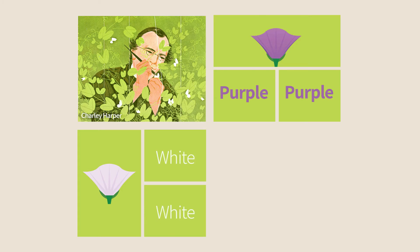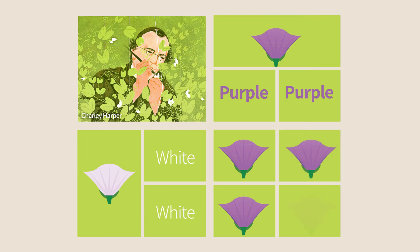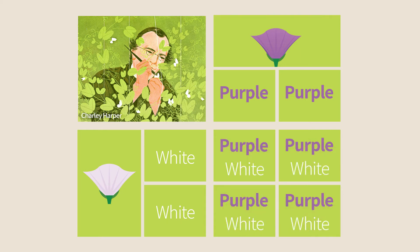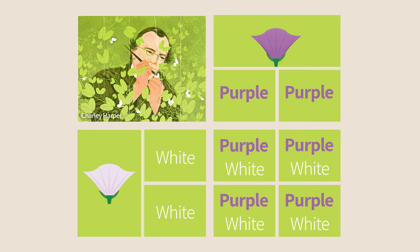When Mendel crossed a purple flower that had two purple alleles with a white one that had two white alleles, he got only purple flowers. As you can see in this table, each of the plants transferred to its offspring only one allele. The purple flower had only purple alleles and the white one only white alleles. It is thus obvious that all offspring inherited one purple and one white allele. As you can see, different alleles can have different effects.